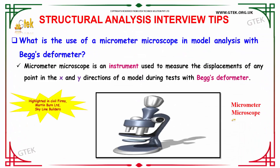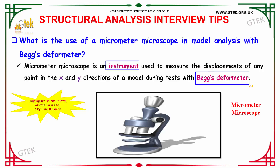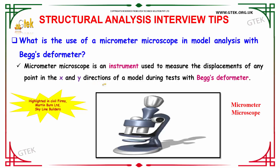The next question is: what is the use of a micrometer microscope in model analysis with the Beggs Deformeter? A micrometer microscope is an instrument used to measure the displacements of any point in the x and y directions of a model during tests with the Beggs Deformeter.